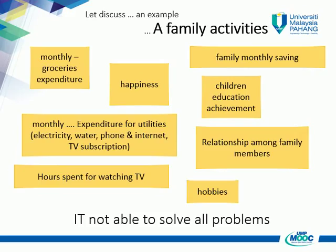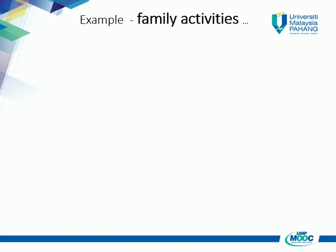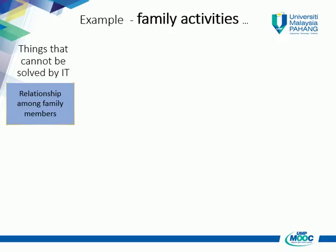These are some activities related to a family. Not all these activities can be solved by an IT solution generally. From the example of family activities, let us divide the activities that can be solved by an IT solution and those that cannot be solved by IT or computer technology. Items that cannot be solved include: measurement of family relationship, calculating the situation or environment for children's education, or counting the happiness level of each family member.